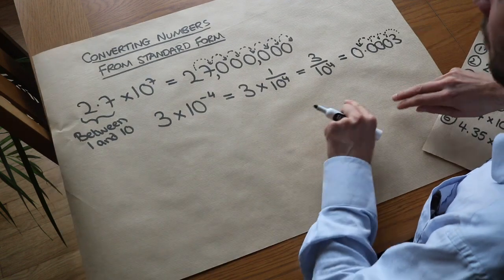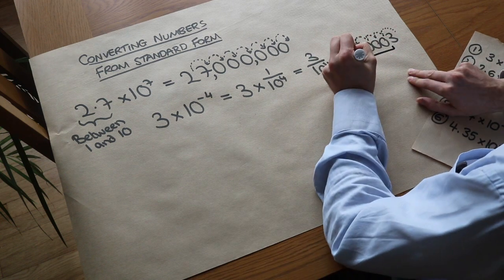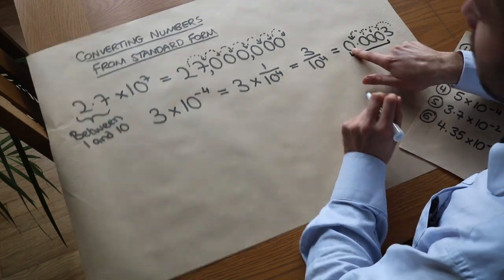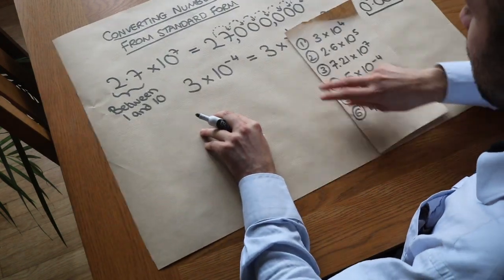And you remember I had a little tip for this: if you had a negative power, that number there gives you the number of zeros on the front of the number, including the zero before the decimal point. So let's do some more examples.